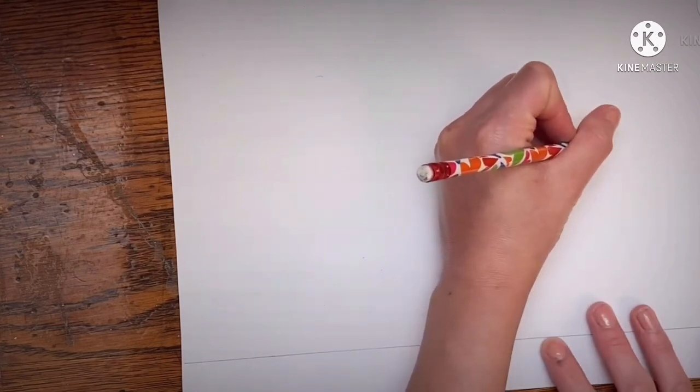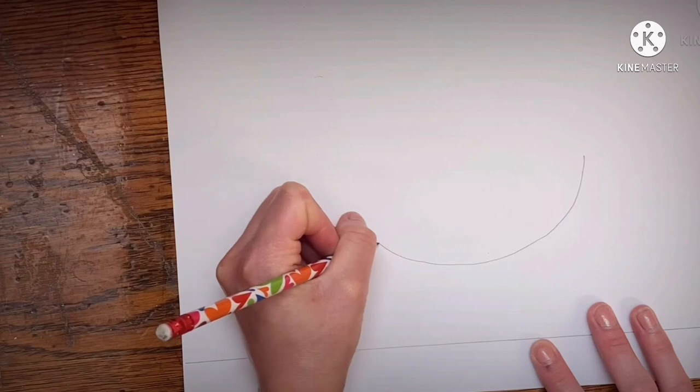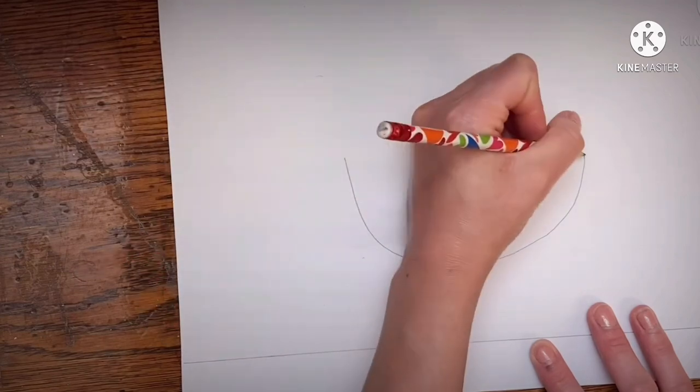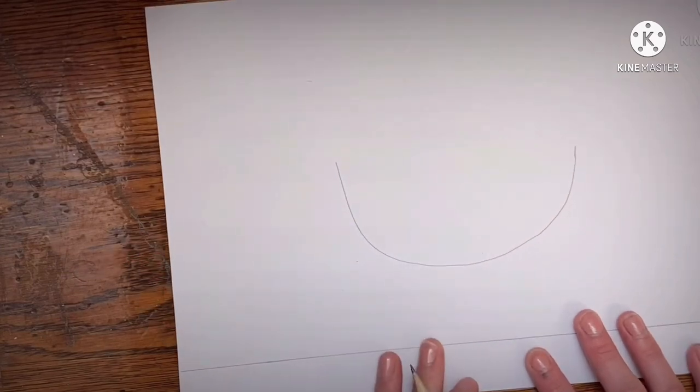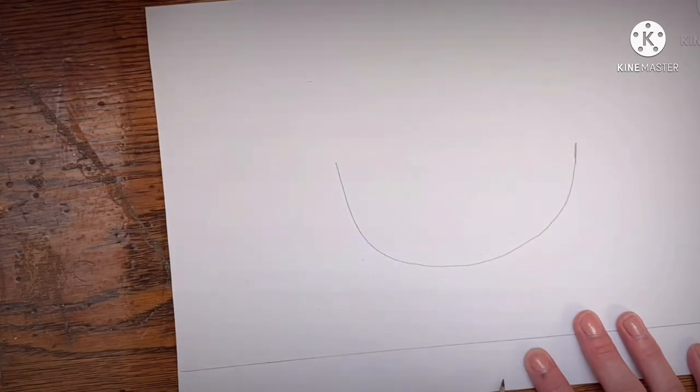So let's draw what looks like a really wide U that goes in the middle of the paper. Also kind of looks like half a circle. Make sure it's just as tall on one side as it is on the other.